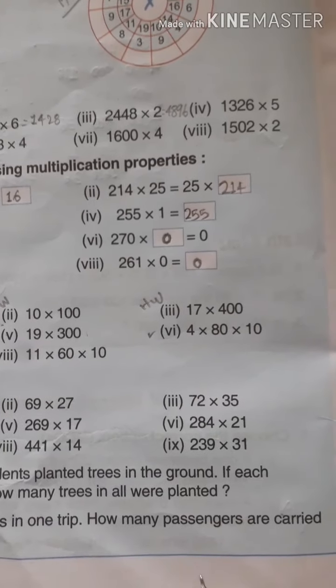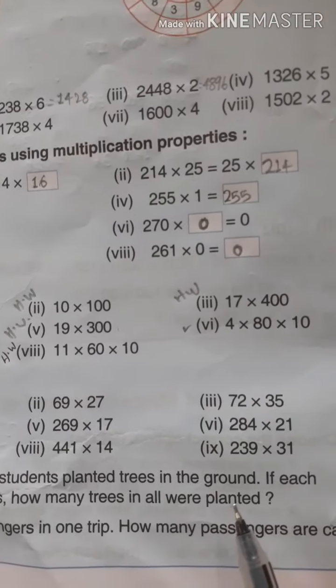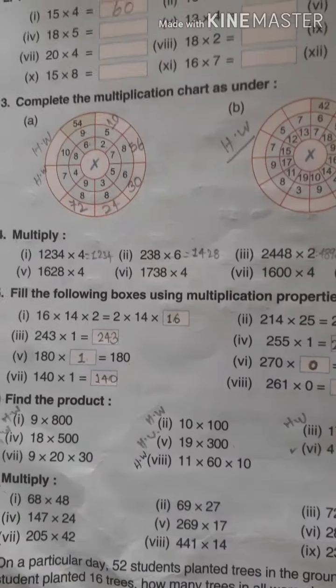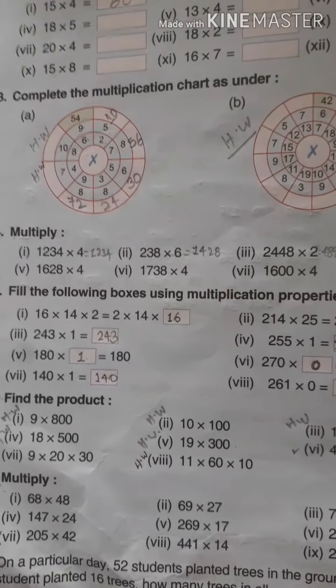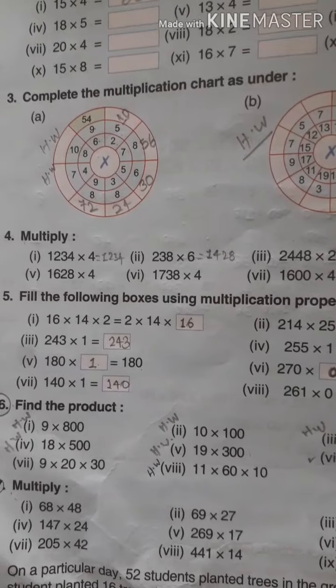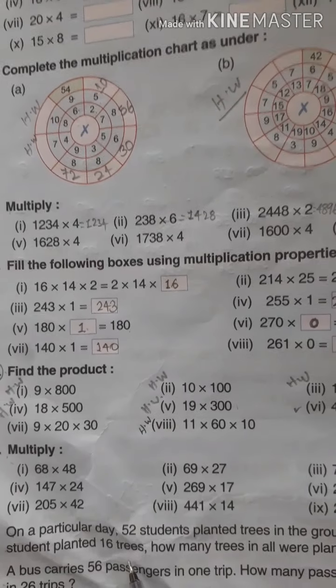In the ones column: 0 into 4 is 0. Then 8 into 4 — what is 8 into 4? 32. We got the answer 32. So 80 into 4 is equal to 320.